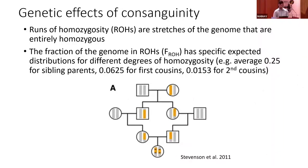F-ROH is related to an individual's parents' relatedness or kinship coefficient. For example, the expected F-ROH for an individual with parents that are siblings is 25%, for an individual with parents who are first cousins it is 6.25%, and so on.